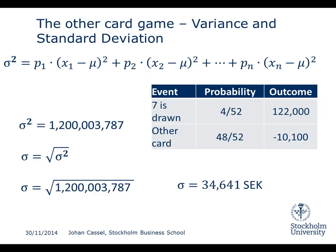Of course, we already knew this when we saw the outcomes, because the most probable outcome is that you lose 10,000. And again, this is covered — it falls within the range if you go from the expected value of 61 plus or minus the standard deviation of 34,000, so this outcome ends up within that area.